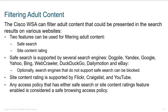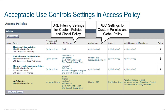Filtering adult content is pretty common for most corporate environments. We can leverage URL listing, but also safe search and site content ratings. Safe search is supported by most search engines — when content is returned, it has a flag indicating adult content; we can look for that flag and drop it. It's also supported by Flickr, Craigslist, YouTube, and others. Turning on these controls is all built within our access policy. You'll see groups of things — for example, block gambling websites: applies to all users, URL category gambling, action block. Pretty straightforward.